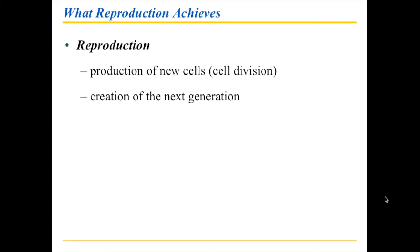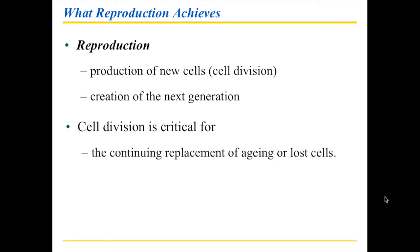Creating the next generation is fundamentally different from producing new cells within the body. When we talk about producing new cells, that happens within the body, whereas the next generation is something that happens outside of it. Both of these are very important, and cell division is critical as part of this.